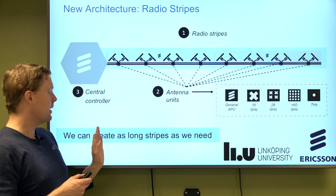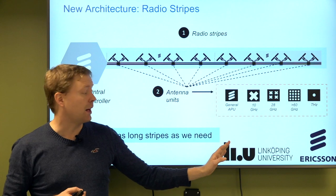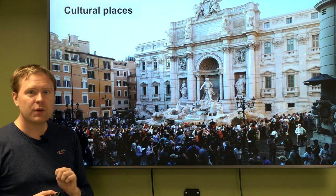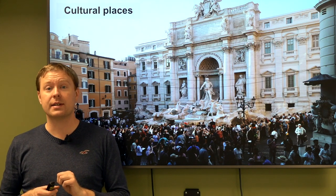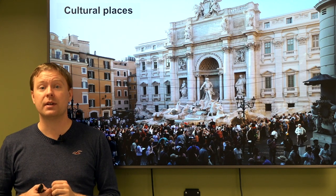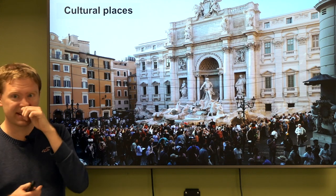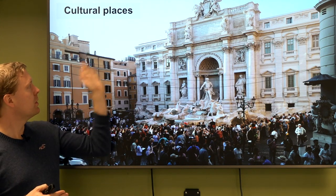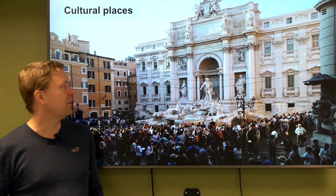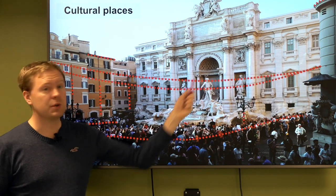We create stripes as long as needed. This is an invention made in collaboration between Linköping University and Ericsson. One reason Ericsson showed early interest is that there are places today where base station technology cannot even be installed — for example, cultural heritage sites where large base stations are not permitted. But you are allowed to put up cables there, so why not put radio stripes on those cables?